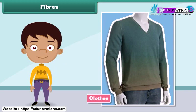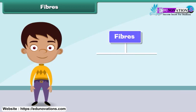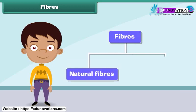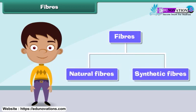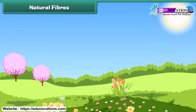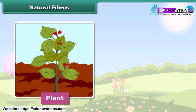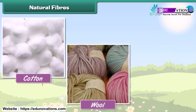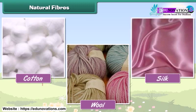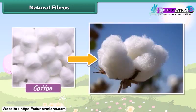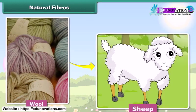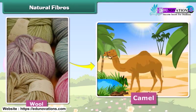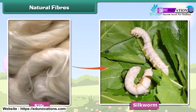Fibers are of two types: natural fibers and synthetic fibers. Natural fibers are made from plants and animals. Some natural fibers are cotton, wool, and silk. Cotton is obtained from plants, wool is obtained from sheep, goats, and camels, and silk is obtained from silkworms.